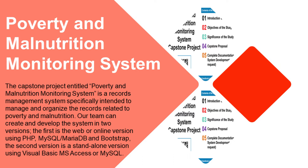This project is a records management system specifically intended to manage and organize the records related to poverty and malnutrition. Our team can create and develop the system in two versions: the first is the web or online version using PHP, MySQL/MariaDB, and Bootstrap. The second version is a standalone version using Visual Basic, MS Access, or MySQL.